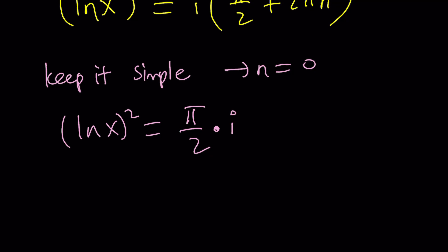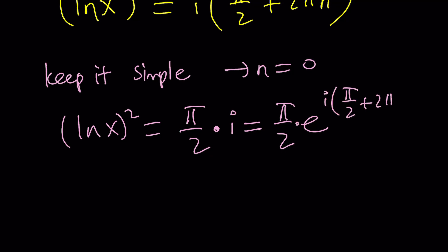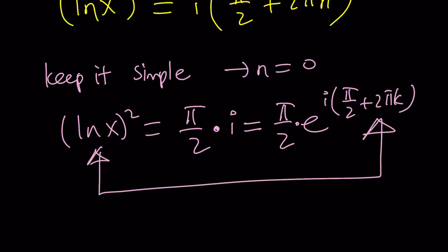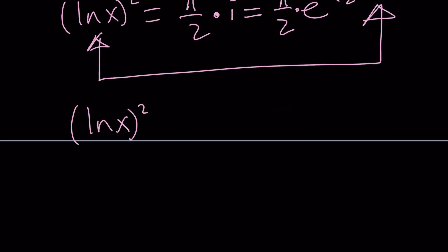So how do you square root both sides? I need to square root i. If you use Euler's formula again, it's easier. i was written as e to the power i times π/2, but this time use a different integer: 2πk, where k is also an integer. So (ln x)² equals π/2 times e to the power i·(π/2 + 2πk).